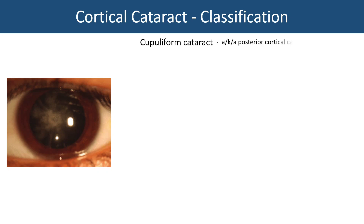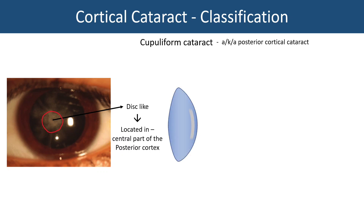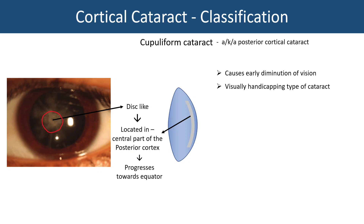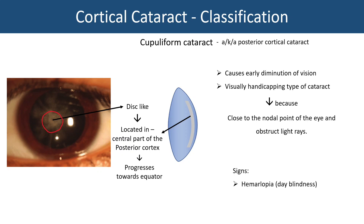Coming to cupuliform cataract, also known as posterior cortical cataract, there is a disc-like opacity present in the center, located in the posterior cortex. In cross-section it starts in the central part of the posterior cortex and progresses towards the equator. Because it is central, it causes early diminution of vision. It is also the most visually handicapping type of cataract due to its location close to the nodal point of the eye. Patients will have vision problems during the day when the pupil is constricted, causing day blindness (hemeralopia), and will also complain of glare specifically at night.